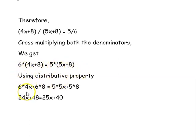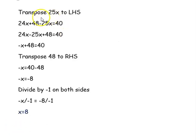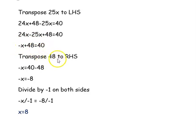Using the distributive property: 24x + 48 = 25x + 40. Transposing 25x to the left: 24x − 25x + 48 = 40, giving −x + 48 = 40. Transposing 48 to the right: −x = 40 − 48 = −8. Dividing by −1 on both sides: x = 8.